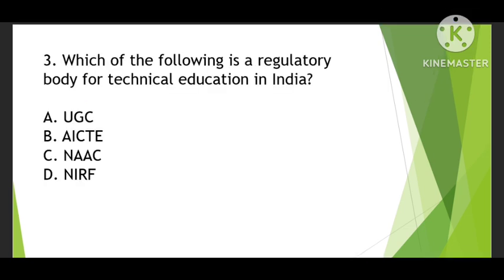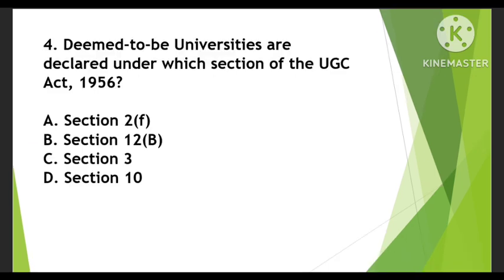Third question: Which of the following is a regulatory body for technical education in India? Options are UGC, AICTE, NAAC, or NIRM. The right answer is B, AICTE. AICTE's full form is All India Council for Technical Education, which is the regulatory body for technical education in India.